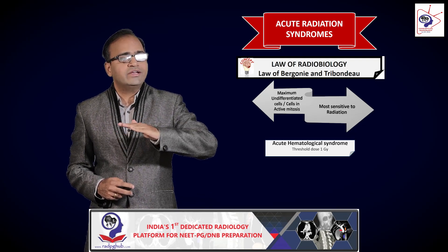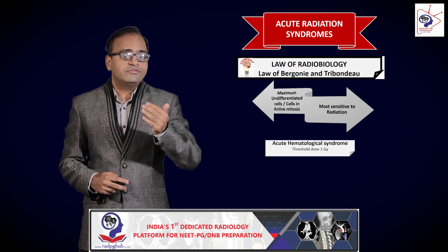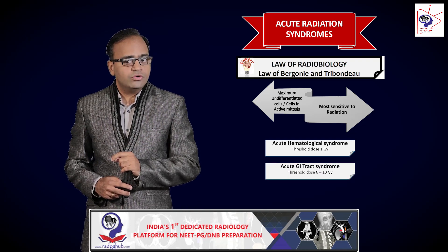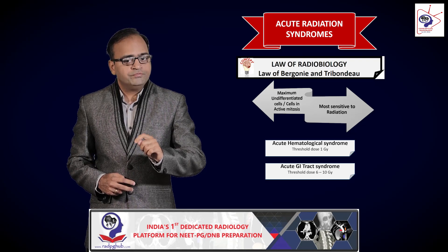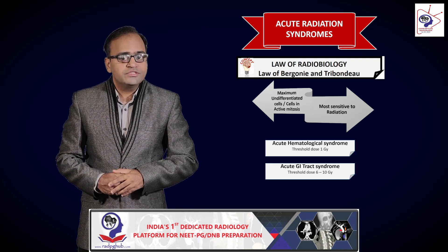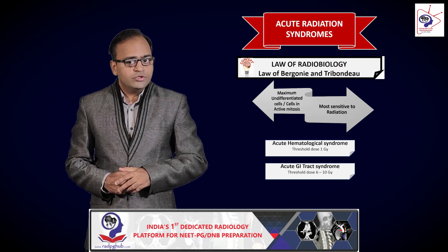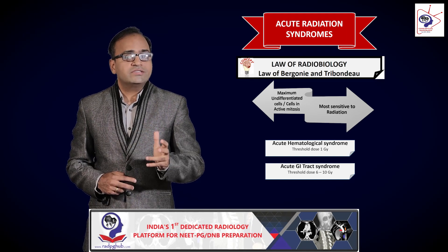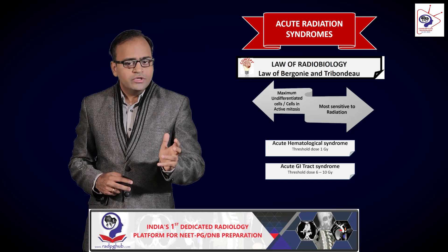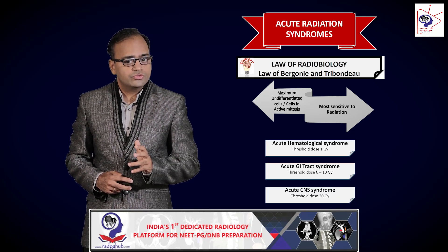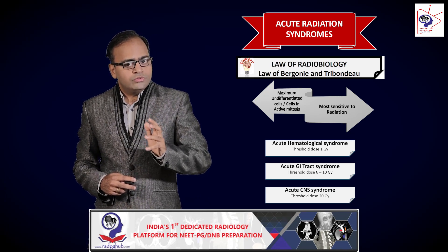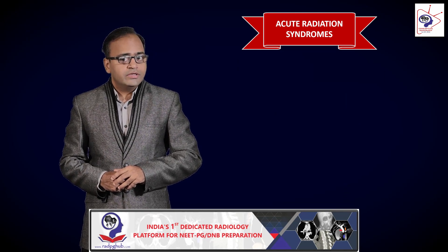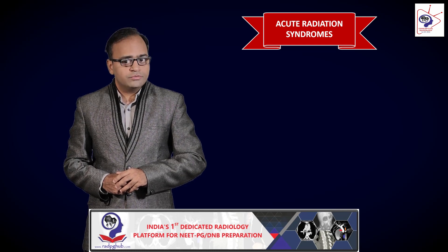The mucosal layer of the GI tract is a layer of constantly dividing cells — from the basal layers, cells divide and migrate to the superficial layers — and therefore this is the first layer to be affected, giving rise to acute GI tract syndrome, the most common symptom of which is diarrhea. In the CNS, on the other hand, there is minimal cell proliferation; the only proliferation that exists is that of glial cells. Therefore the CNS is relatively radio-resistant, and the acute CNS syndrome is seen only at a very high threshold dose. Importantly, radiotherapy is a very important treatment modality for brain tumors.